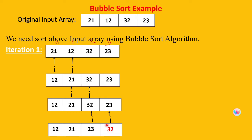At the end of iteration 1, you can see that 32 has taken its final place — the largest element reaches its correct position at the end of the array. If we further increment i and j, j will go out of the array with no element to compare, so we stop here. At the end of iteration 1, the element 32 (shown in red) is sorted.